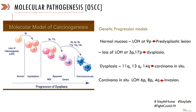Dysplasia is considered a potentially malignant oral disorder, which can be seen clinically as leukoplakia or other conditions. Further genetic events in the dysplastic lesion result in a more severe form of dysplasia, also known as carcinoma in situ. Genetic defects in the long arm of chromosome 11, long arm of chromosome 13, and long arm of chromosome 14 result in the development of carcinoma in situ. Further loss of heterozygosity in the short arm of chromosome 6, chromosome 8, and the long arm of chromosome 4 results in the development of oral squamous cell carcinoma.